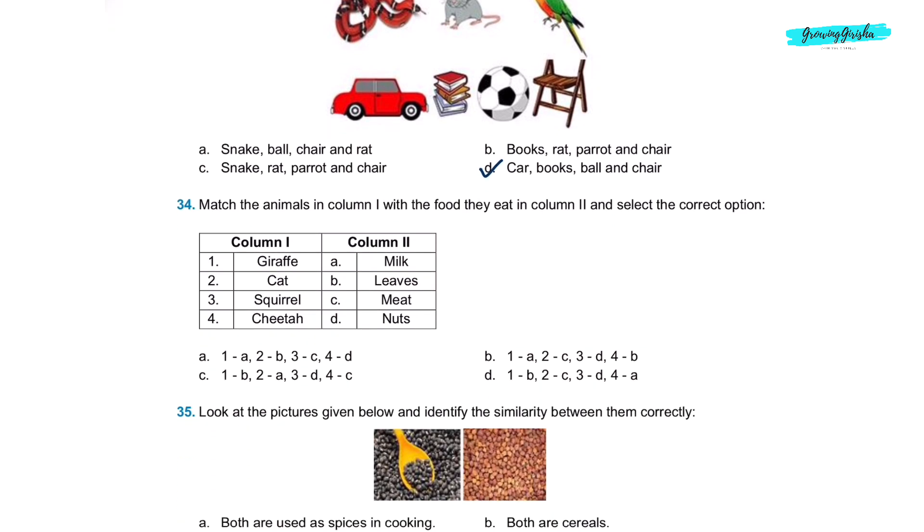Question 34. Match the animals in column 1 with the food they eat in column 2 and select the correct option. Giraffe eats leaves. Cat drinks milk. Squirrel eats nuts. And cheetah eats meat. So correct option would be 1B, 2A, 3D, 4C, which is in option C. So option C is the correct answer.